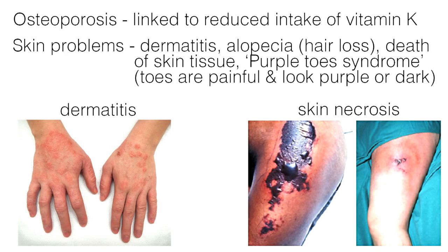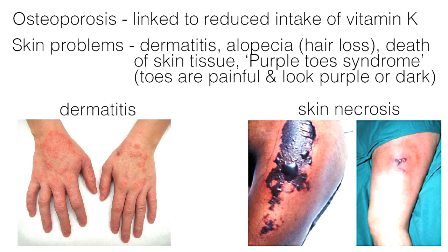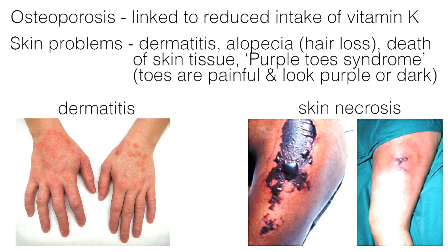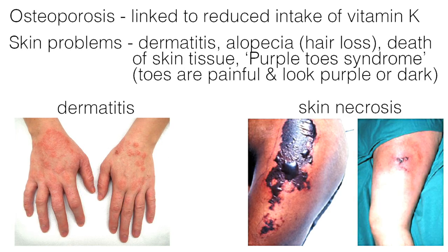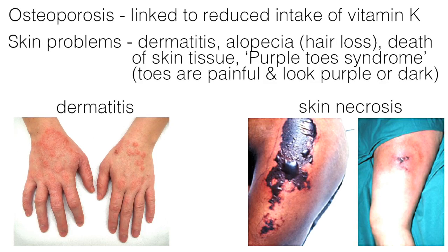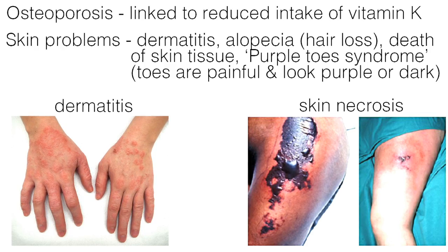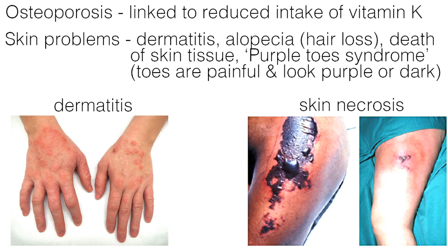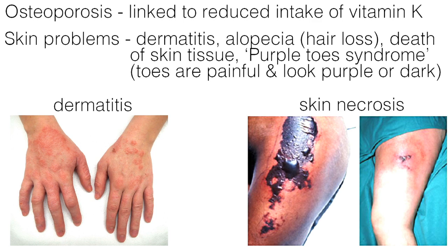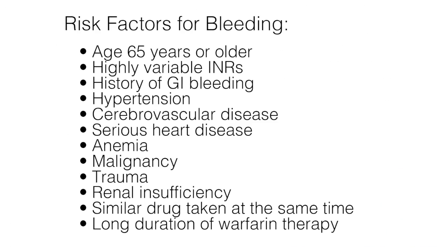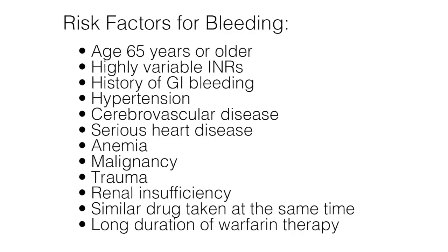Some less common adverse effects of Coumadin include the following. Several studies have shown a decrease in bone mineral density, leading to osteoporosis, thought to be linked to a reduced intake of vitamin K, which is necessary for bone health. Side effects involving the skin include dermatitis, alopecia (hair loss), and purple toes syndrome, where the toes are painful and look purple or dark. Warfarin-induced skin necrosis is a rare but serious complication, usually occurring when warfarin treatment is initiated in a patient with protein C deficiency, which is a naturally occurring anticoagulant. Warfarin can cause major or fatal bleeding, which is more likely to occur when the medication is first started or if too much warfarin is taken.